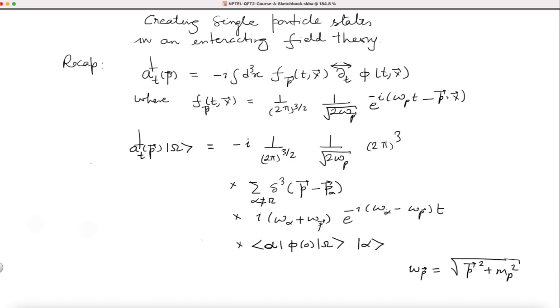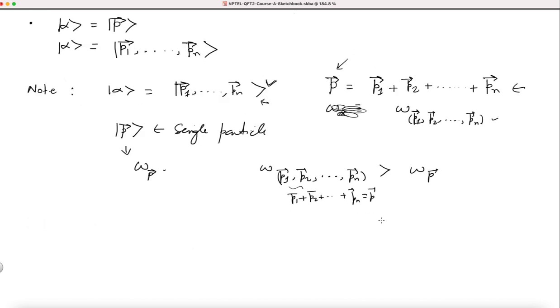Now you have ω_alpha here and I am right now looking only at multi particle states. Then ω_alpha will always be greater than ω_P. This object ω_alpha - ω_P is positive. That's what I want to use. Now ω_alpha - ω_P is greater than 0 for this multi particle state. Here we go.